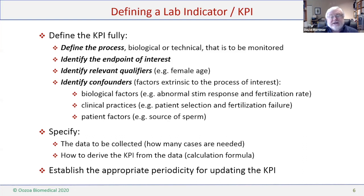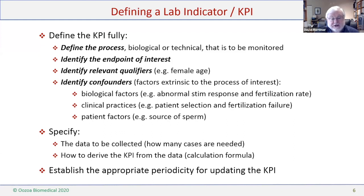Confounders are things extrinsic or outside the process of interest that could affect variability without being part of the process itself — they essentially create noise in the system. These include biological factors such as abnormal stimulation response, clinical practices like patient selection, and simple patient factors like source of sperm. You need to specify the data you're going to collect, how many cases are needed, how to derive the KPI from the data — your calculation formula — and then establish the appropriate periodicity for updating the indicator.